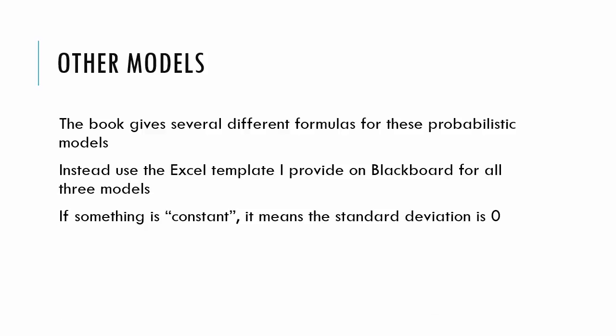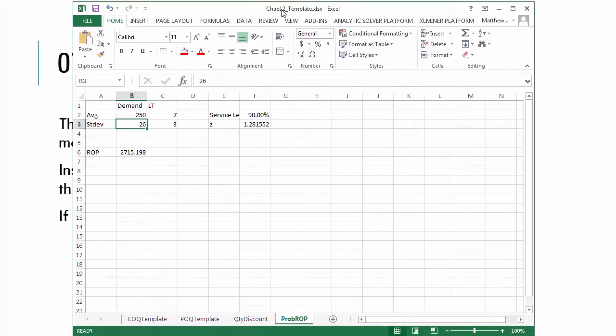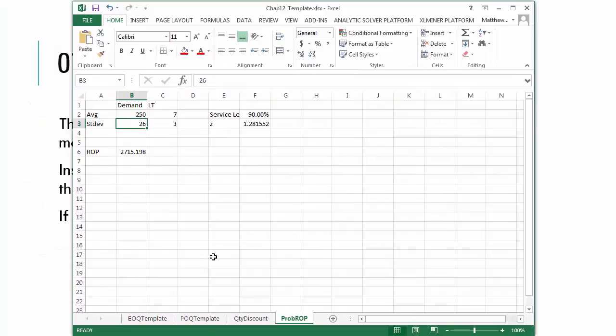So if you look at the Excel template that I have out there, the very last tab, PROB ROP, it asks for the average demand, standard deviation of demand, average lead time, standard deviation lead time.